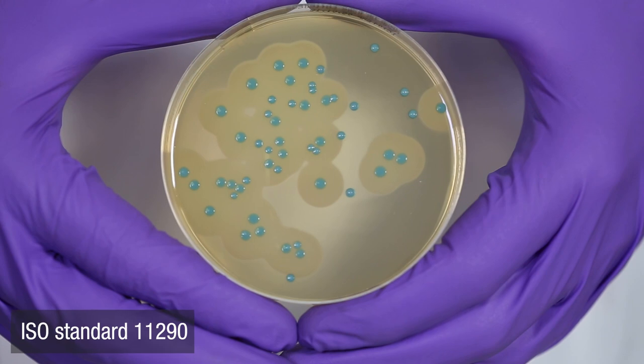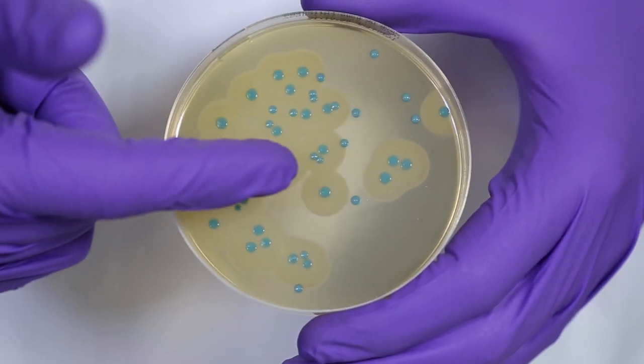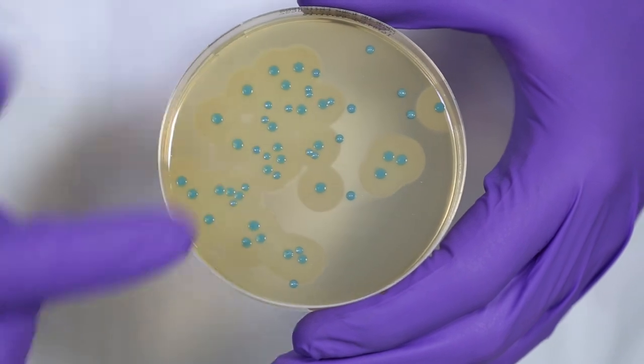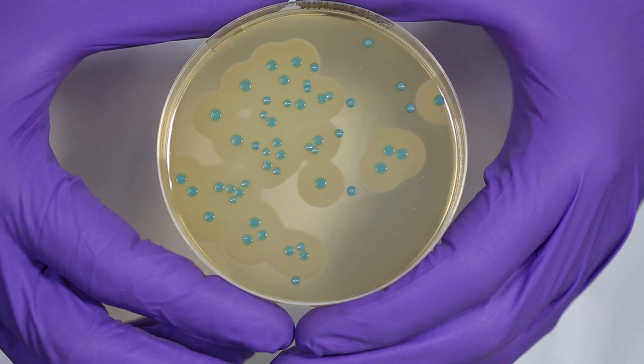Here is our Listeria chromogenic agar as described in ISO 11290. Pathogenic Listeria monocytogenes grows on the agar as a green colony surrounded by an opaque halo. The agar contains a cocktail of antibiotics that exerts selective pressure on non-target organisms and inhibits them.